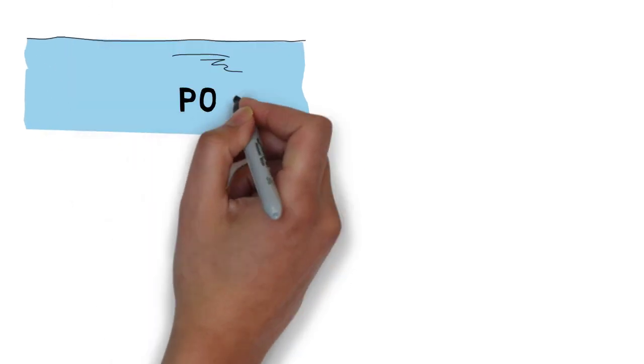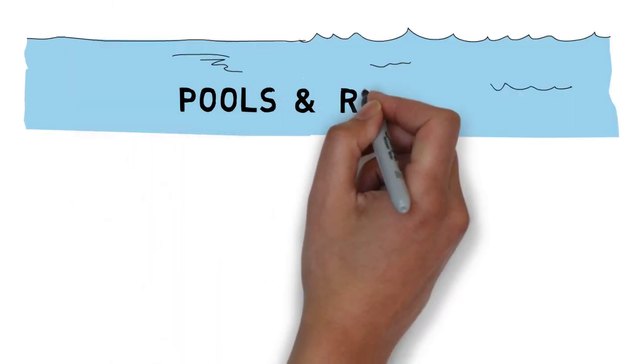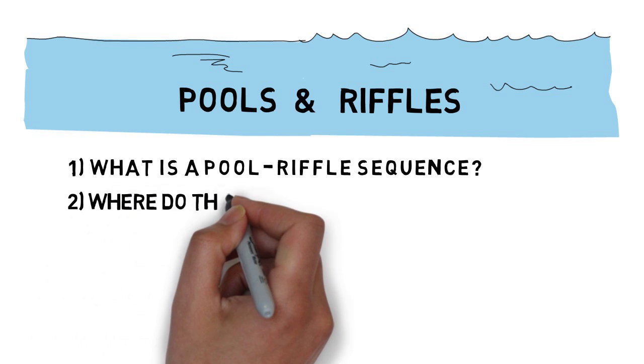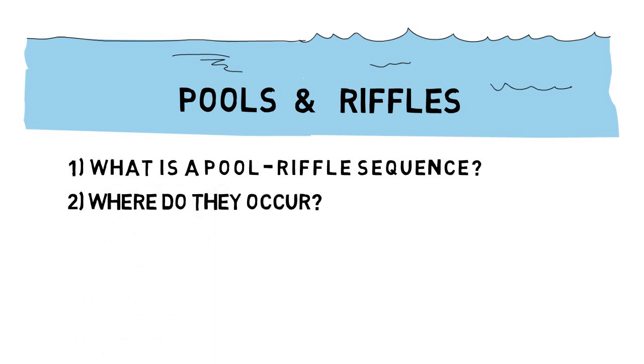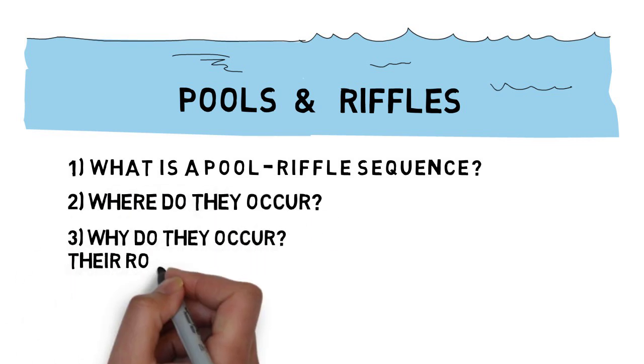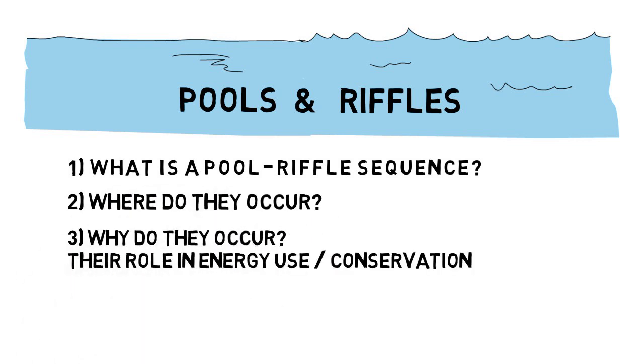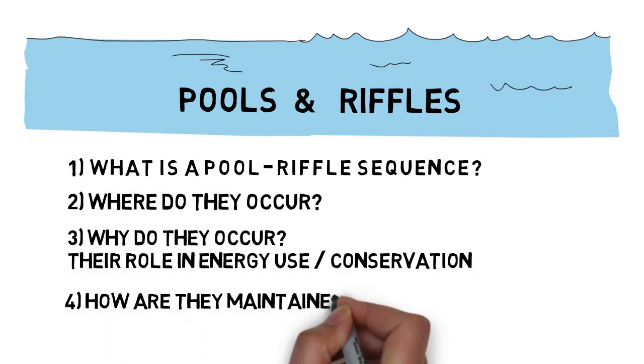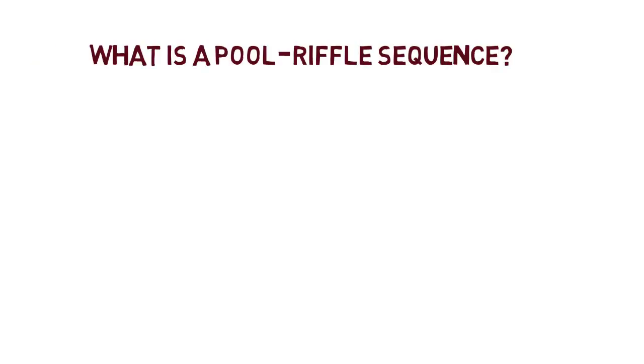This video will briefly discuss the role and maintenance of pool-riffle sequences. We will look at what they are, where they occur, their role in balancing a stream's energy use, and how they may be maintained.